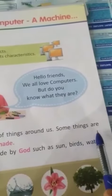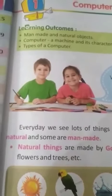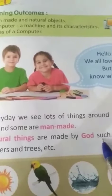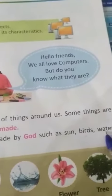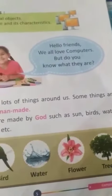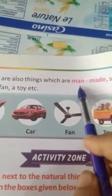Some things are natural and some are man-made. Natural things are made by God, such as the sun, birds, water, flowers, and trees.